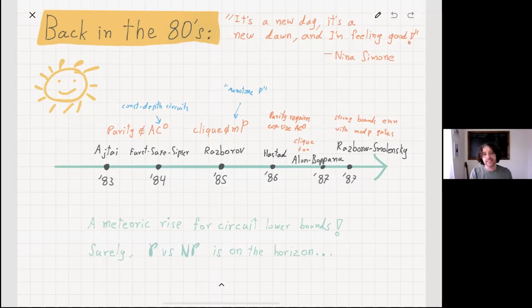People went out to the street and celebrated, and I actually don't know that because I wasn't born, but I always imagined these happy times. It seems that we have this meteoric rise for circuit lower bounds. I'm guessing that if you'd ask someone in the late 80s, they would tell you that surely P versus NP is on the horizon.